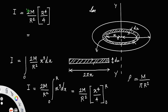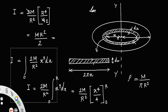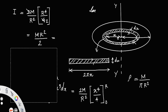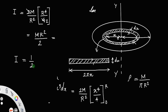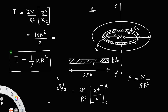Simplifying, we can cancel 2 and 4 to get 2 in the denominator, and r² cancels with r⁴ to leave r² in the numerator. Therefore I equals mr²/2, or I equals half mr². This is the expression for the moment of inertia of a circular disk about the axis through its center perpendicular to its plane.